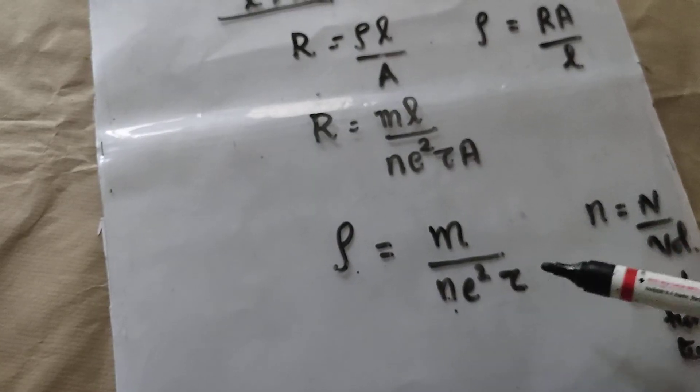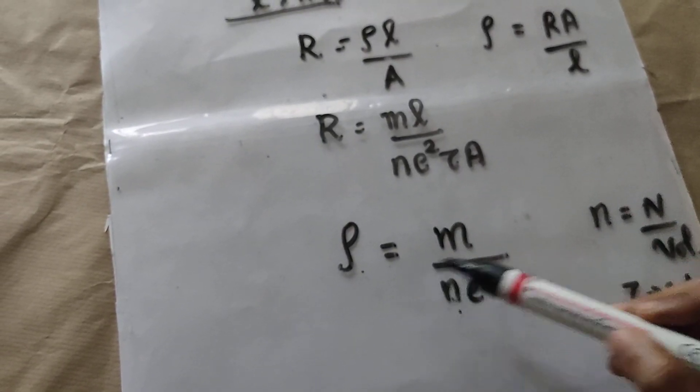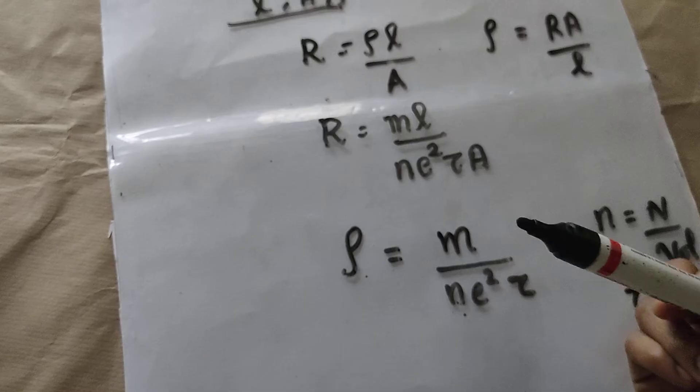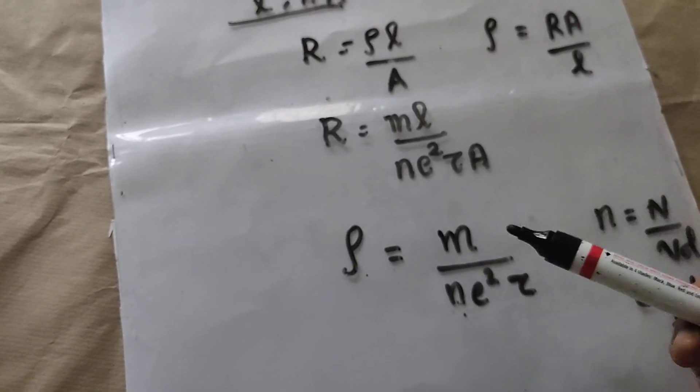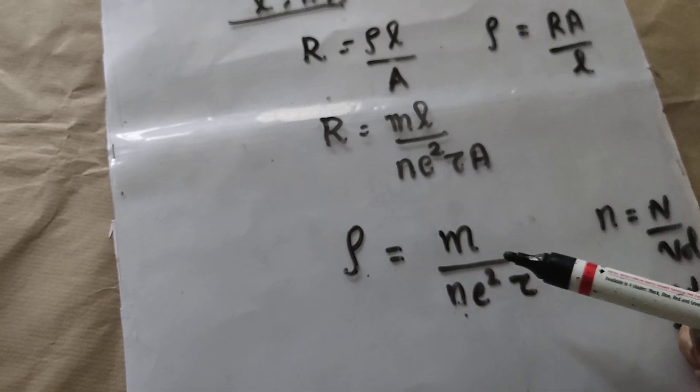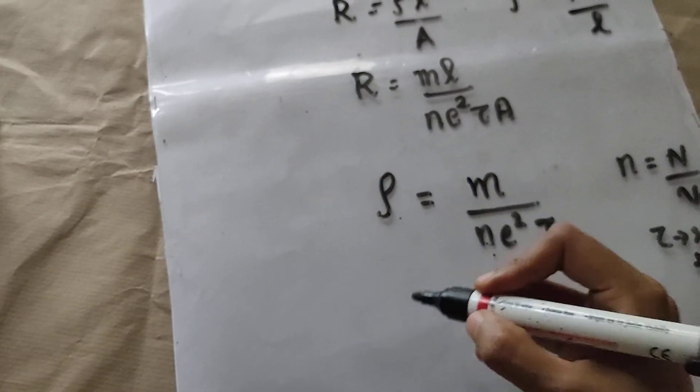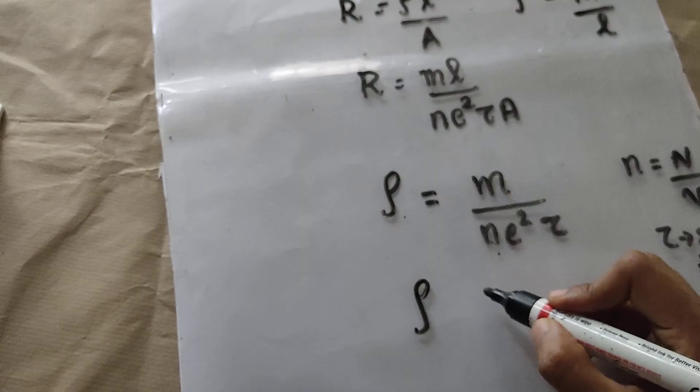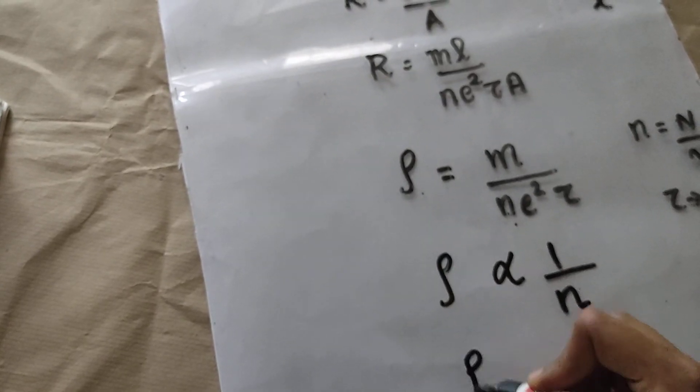From this equation, you can see that resistivity does not depend on the dimensions of the conductor — it does not depend on length or area of cross section. Instead, it depends on number density and relaxation time, and resistivity is inversely proportional to both electron density and relaxation time.